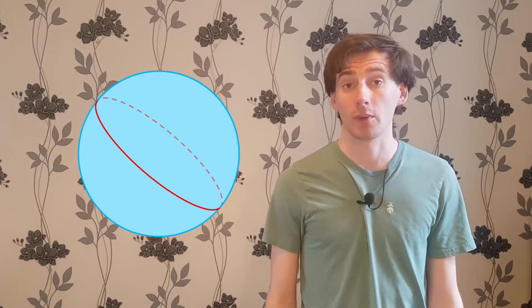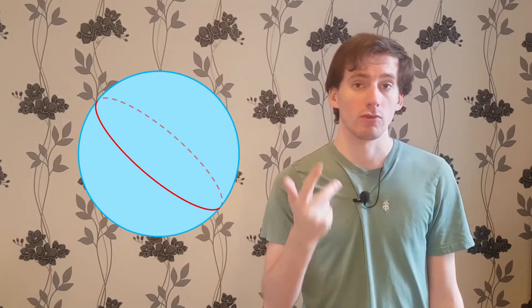Welcome back. In the last video we started looking at how you can do geometry on the sphere. We saw that straight lines on the sphere are great circles and isometries of the sphere fall into one of the following categories: the identity, reflections, rotations and glide reflections.